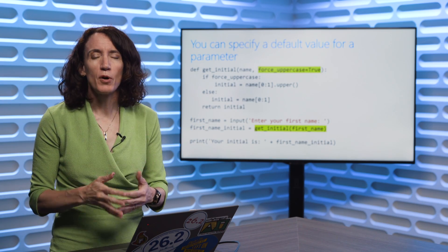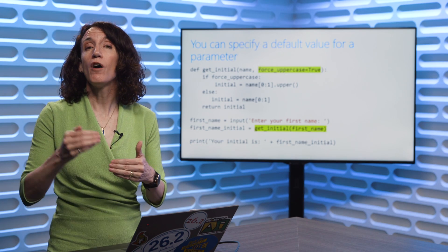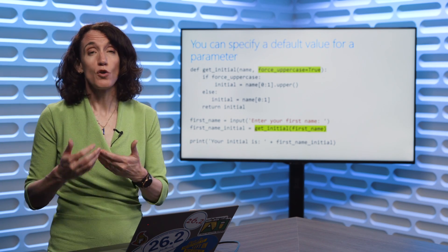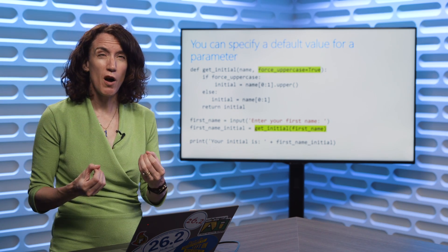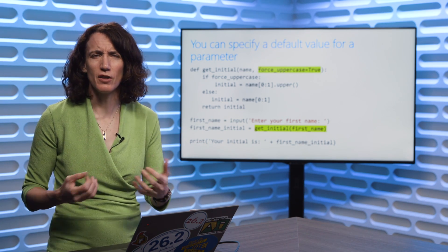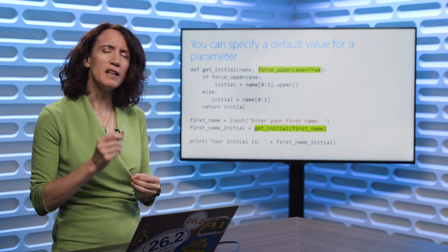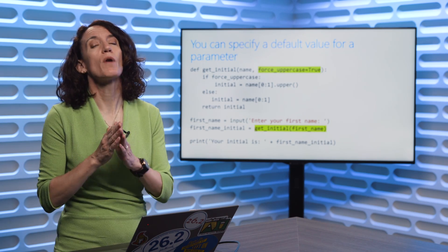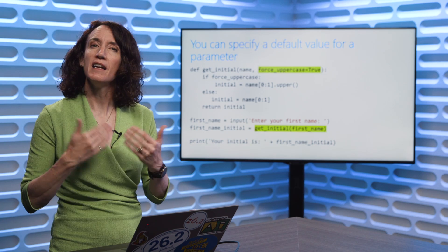What's happened is the person who created the function has some default values for the parameters, and it may be that the default values work fine for a certain situation. So when you're calling a parameter or looking up documentation for functions, take a look and see if some of the parameters have default values. If they do, that means you don't have to pass in a value for them. It's optional.